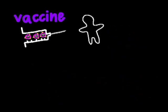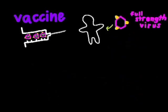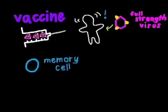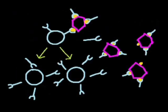After vaccination, if your body is exposed to the actual full strength virus, the body already has memory cells, meaning it can destroy the virus much faster and more effectively.